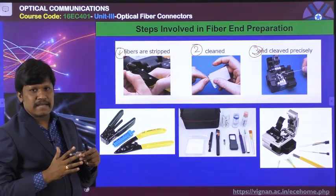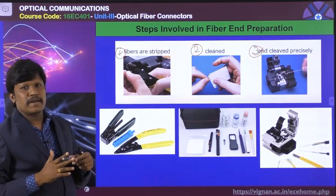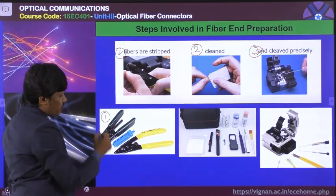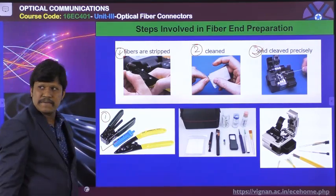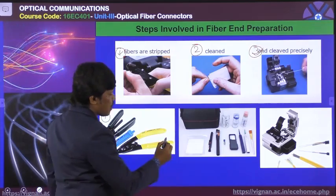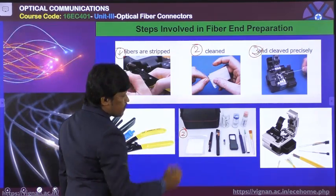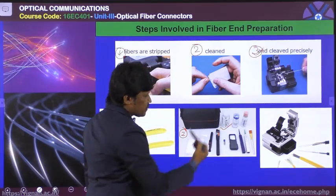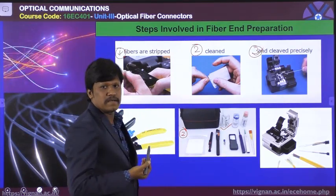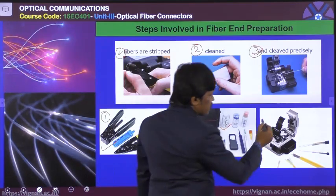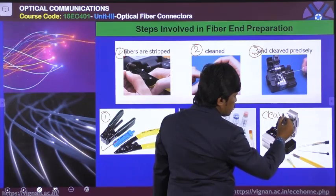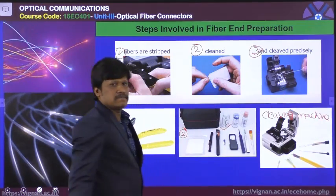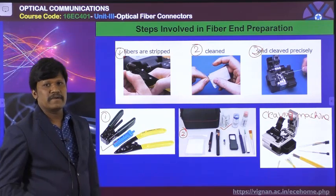Cleaving means cutting the cable for proper alignment. The fibers are stripped using stripping tools. The fiber end is cleaned with isopropyl alcohol or acetone. The fiber cable is cleaved with the help of a cleaving machine.